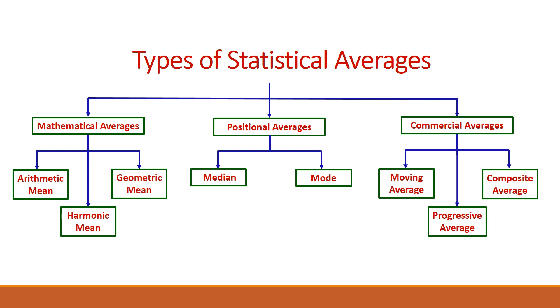Next, let us discuss the different types of statistical averages. The averages are broadly classified into three as mathematical averages, positional averages, and commercial averages. The mathematical averages include arithmetic mean, harmonic mean, and geometric mean. And the positional averages include median and mode. And the commercial averages are the moving average, progressive average, and the composite average.